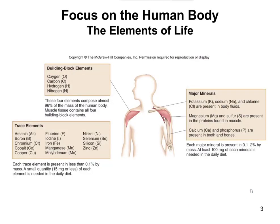There are four main building block elements. These are going to be oxygen, carbon, hydrogen, and nitrogen. So between these four elements, 96% of the mass of the human body is made up of these things. Water is most of our weight, so H2O all fit in there.